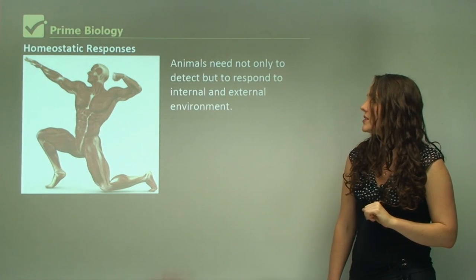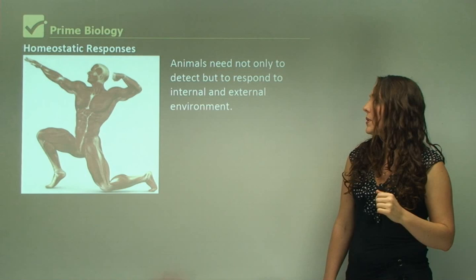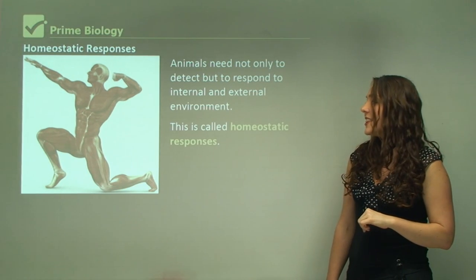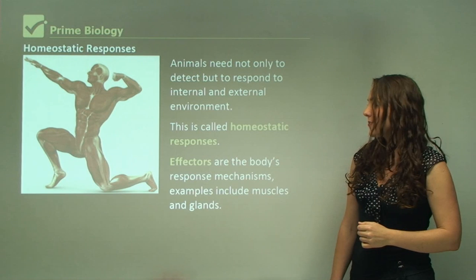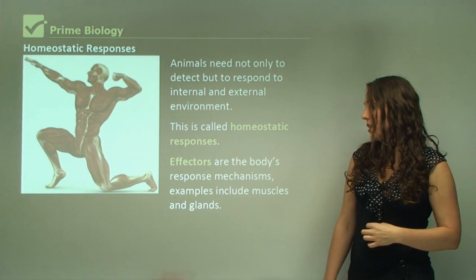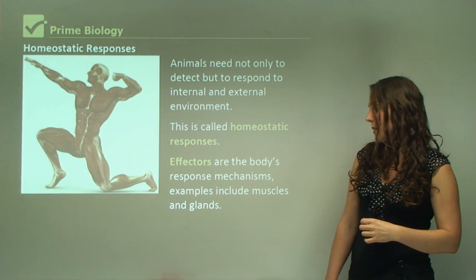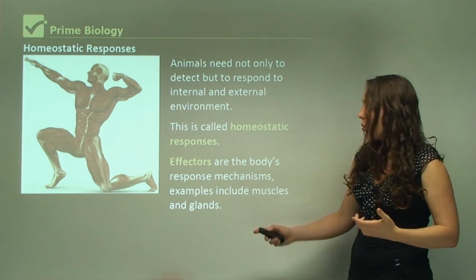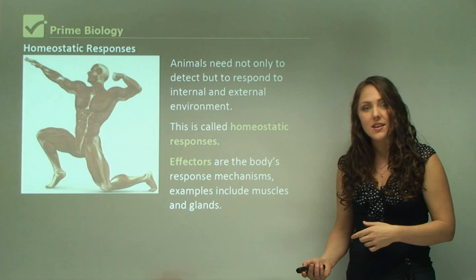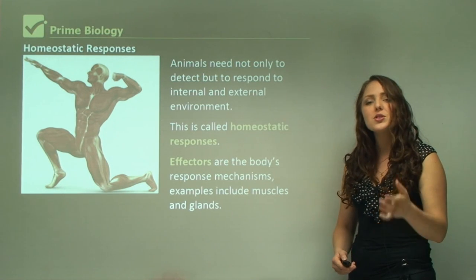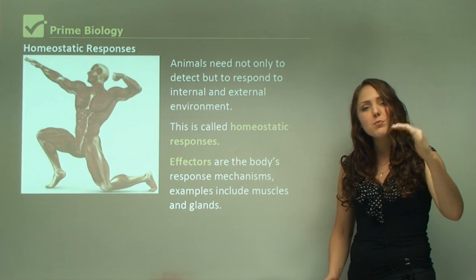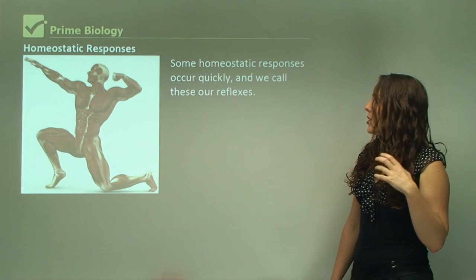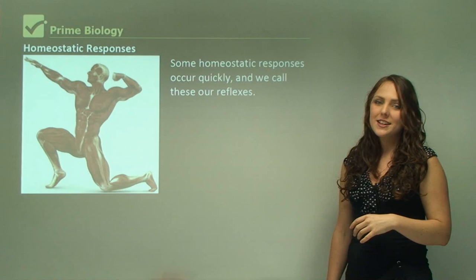Animals need not only to detect but also to respond to changes in their internal and external environments — these are called homeostatic responses. Effectors are the body's response mechanisms and include muscles and glands. Muscles might contract to produce heat, while glands release hormones to create changes that bring the body back to its stable state. Some homeostatic responses occur quickly and are called reflexes.